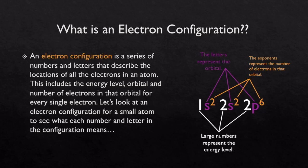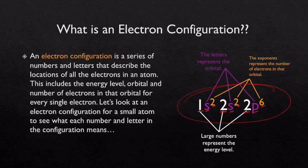If you take a look over here, these large numbers in white represent the energy level. The purple letters represent the orbital that electrons are found in within those energy levels, and the exponents represent the number of electrons found within that orbital. In this video we're going to learn how to write these electron configurations for any element on the periodic table, and how to identify which element's electron configuration we're looking at.